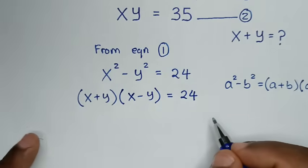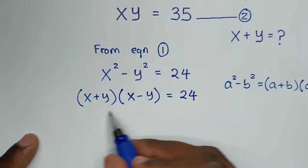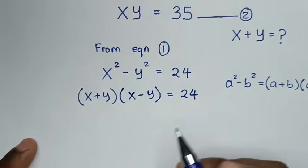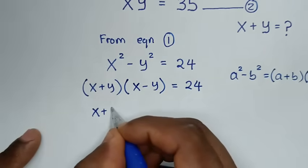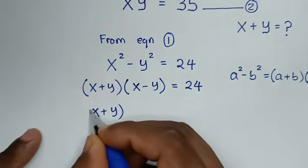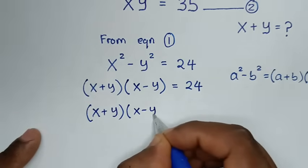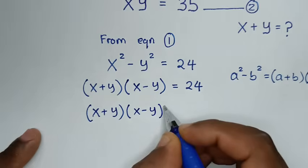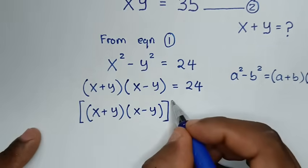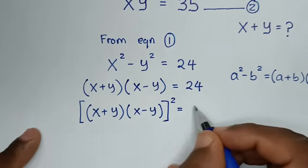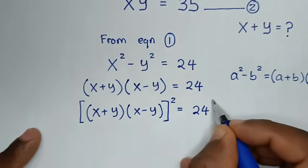In the next step, we will square both sides of this equation. So (x + y)(x - y), we square it, and it equals 24 squared on the other side.